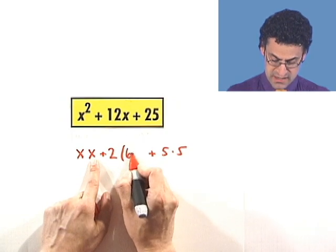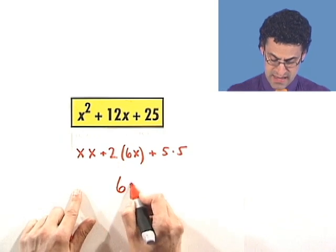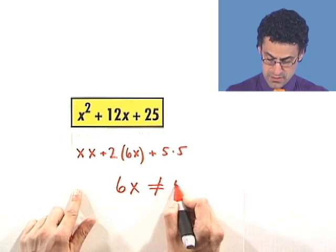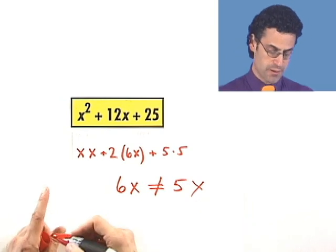Well no, I'm actually seeing 6 times x to get me to be 12. And 6x does not equal 5x, which is what we need to make this a perfect square. This is not a perfect square.